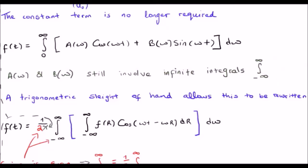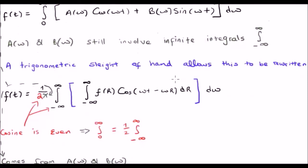The a(ω) and b(ω) still involve infinite integrals. Now we're able to do the trigonometric sleight of hand I mentioned earlier. Remember, a(ω) has a cosine in it and b(ω) has a sine in it. So you have a product of cosines plus a product of sines. The trigonometric sleight of hand allows us to rewrite this as cos(ωt - ωr). We still have the dω here, but because of the integrals for a(ω) and b(ω), we also have a dr.